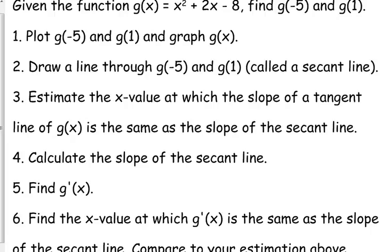Then I wanted you to draw a line through those two specific points, that's what we call the secant line. We've talked about those several times. A secant line goes through any two points on a curve. And then, before you do anything else, I wanted you to estimate where you thought the slope of the tangent line was the same as the slope of the secant line.